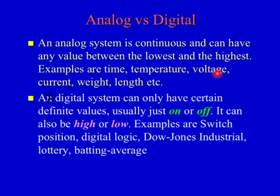A digital system can only have certain definite values, usually just on or off. It can also be high or low. Examples are switch position, either on or off. Digital logic. Dow Jones Industrial lottery, betting average.